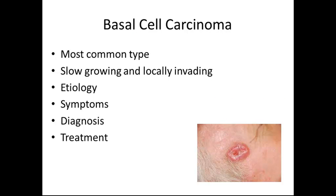Basal cell carcinoma is the most common type of skin cancer. It is very slow-growing and locally invading. The etiology is unclear but linked to genetic and environmental factors. Symptoms include nodules with a depressed center, a smooth shiny bump that is pink to pearly white, or a non-healing lesion that bleeds easily. Diagnosis is typically done by biopsy, and treatment is usually surgical removal.